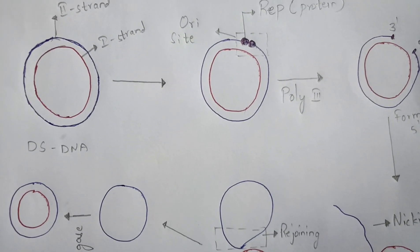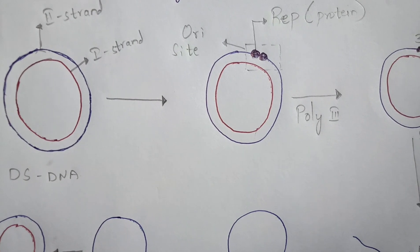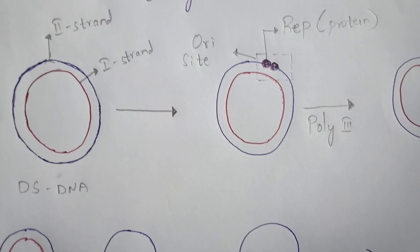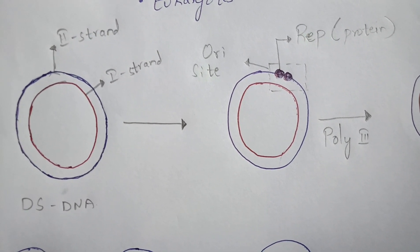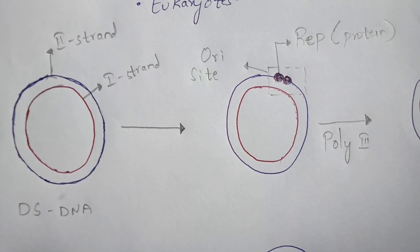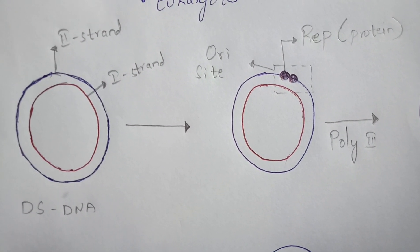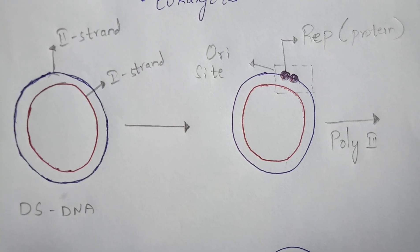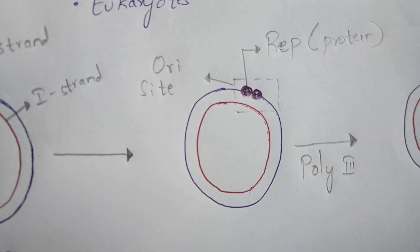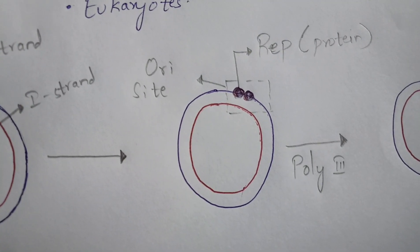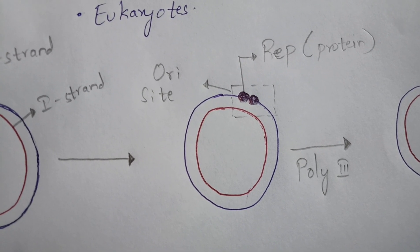Now coming to the process of rolling circular replication — how does the DNA mainly undergo replication? We have a double-stranded DNA (dsDNA). The red color strand is the first strand and the blue color one is the second strand. There is a black dot representing the REP protein, which is the replication initiator protein.